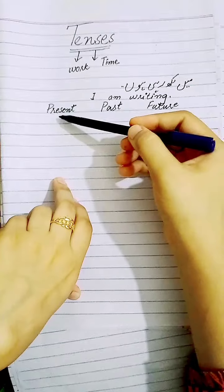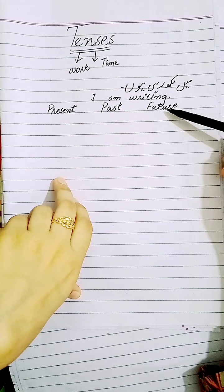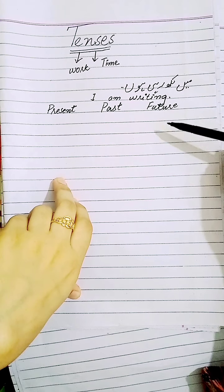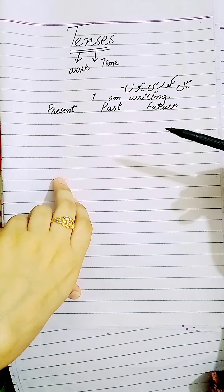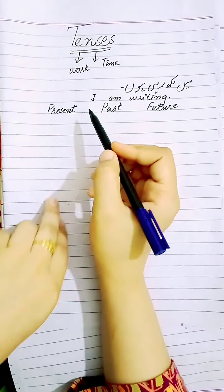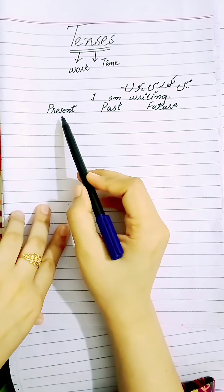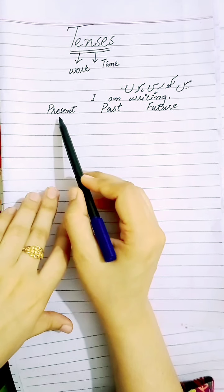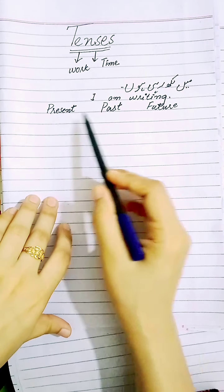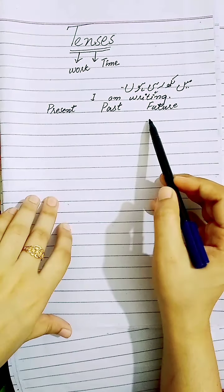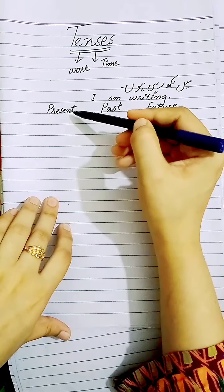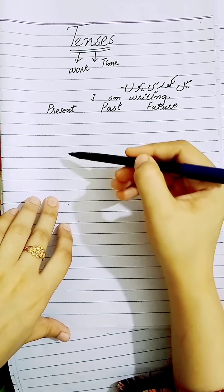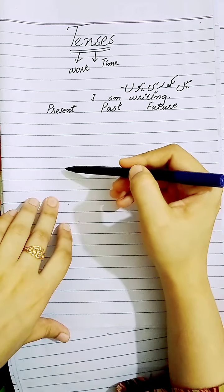Moving further, every type of tense has further extended branches. How many extended branches? Each tense has further 4 branches. So we have categorized that there are 3 types of time — present, past, and future — and each of these will be divided into 4 further types.